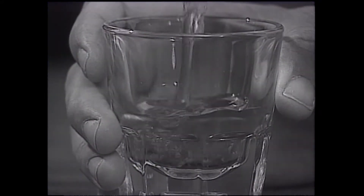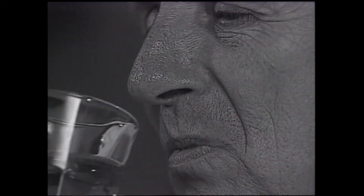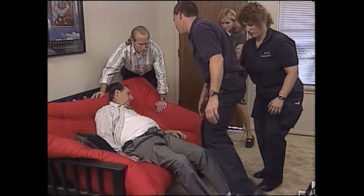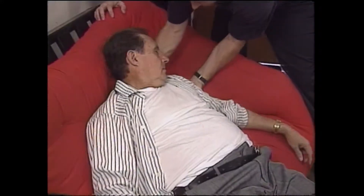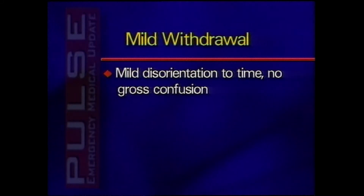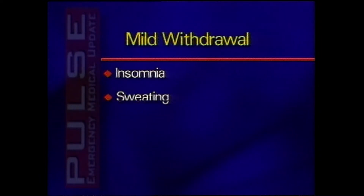These syndromes typically coexist, so it is more practical to classify withdrawal as mild, moderate, or severe. Mild withdrawal symptoms usually start within six to eight hours after a significant decrease in blood alcohol levels, peaking and beginning to decrease within 24 hours. Hyperalertness, shakiness, and insomnia can last up to two weeks. Symptoms include mild disorientation to time with no gross confusion, tremors, irritability, headaches, insomnia, sweating, being easily startled, and high anxiety.